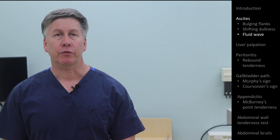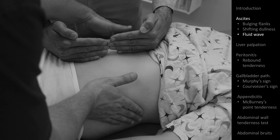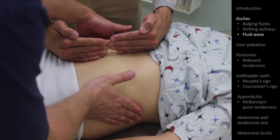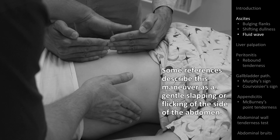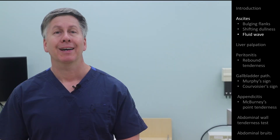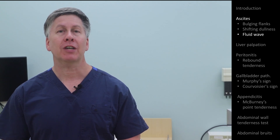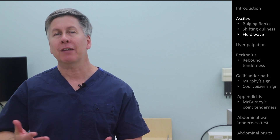The last ascites maneuver is called the fluid wave, and it requires a second examiner. One examiner places their two hands against the midline of the anterior abdominal wall, while the other places their hands on either side of the distended abdomen. While the first examiner's hands stay still, the second rapidly pushes against one side of the abdomen and observes for a wave of fluid felt by the other hand. The point of the first examiner is to prevent movement of the abdominal wall itself from confusing the result. Occasionally, if a second examiner is not available, the patient themselves might place their own hands against their abdomen, but that seems kind of awkward.